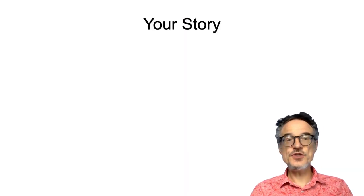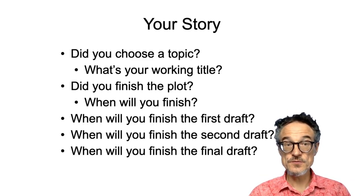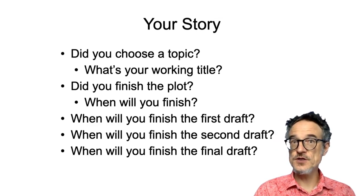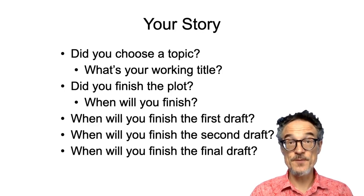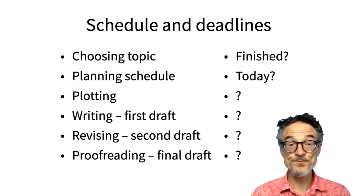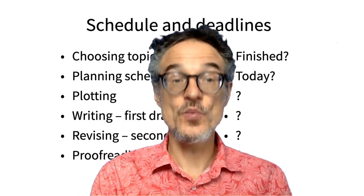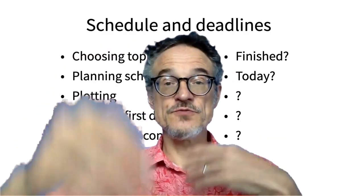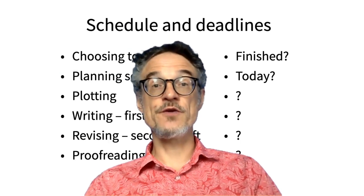Anyway, your story. Did you choose a topic? Do you have a working title for your story? Did you finish the plot? Did you start writing the plot? When will you finish the plot? When will you finish the first draft of your story? When are you going to finish the second draft? When are you going to finish the final draft? Can I ask you to make a writing schedule and set your own deadlines? Hopefully you've finished choosing a topic — you should have many ideas for stories. Can you pick one? Maybe today you should make a schedule. Decide when you're going to finish each step.